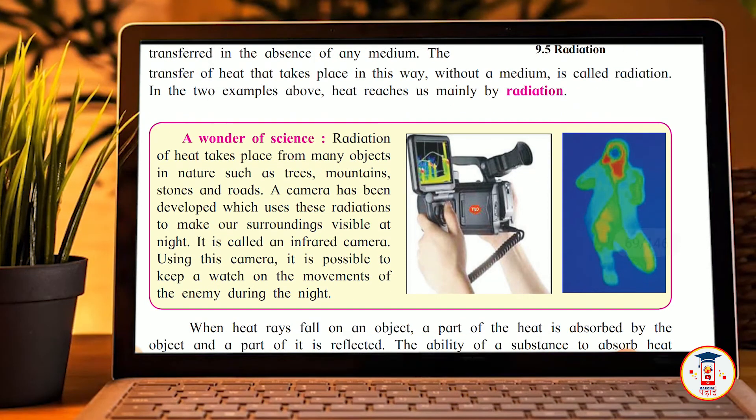Now let's go to the wonders of science. We also have radiation technology. Science has developed cameras that can detect radiation, called infrared cameras. These cameras use radiation to make our surroundings visible at night. Using this camera, it is possible to keep watch on the movements of the enemy during the night.